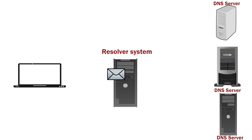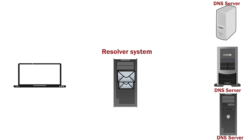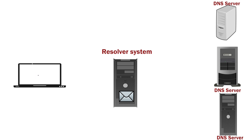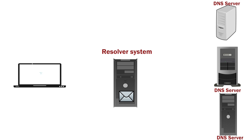Usually, resolver systems are also configured to cache the result. If caching is enabled, the resolver system saves a copy of all replies it receives from DNS servers. Next time, if it receives a query for the same name, instead of forwarding the query to DNS servers, it uses locally saved copies to answer the query. The sender system learns the IP address of google.com from the reply message it receives from the resolver system.